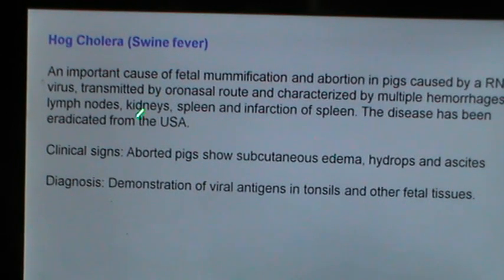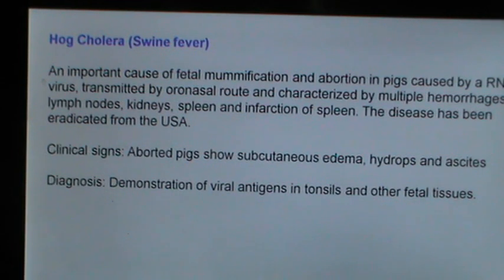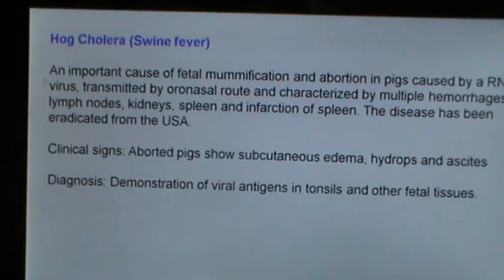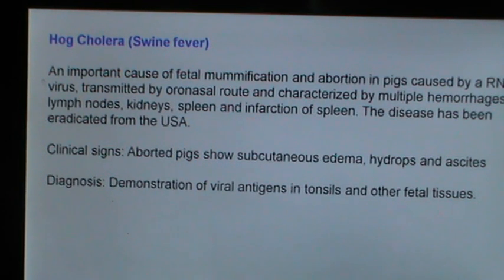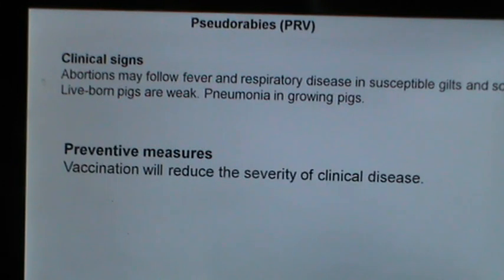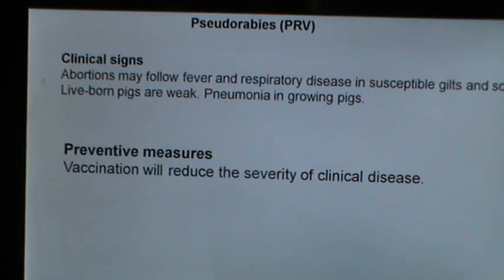Hog cholera or swine fever is an important cause of fetal mummification and abortion in pigs, caused by an RNA virus transmitted by the oronasal route and characterized by multiple hemorrhages in lymph nodes, kidneys, spleen, and infarction of the spleen. The disease has been eradicated from the USA. Clinical signs include aborted pigs showing subcutaneous edema, hydrops, and ascites. Diagnosis is through demonstration of viral antigens in tonsils and fetal tissues. For Pseudorabies (Aujeszky's disease), abortion may follow fever and respiratory disease in susceptible gilts and sows; live-born pigs are weak, and pneumonia can be seen in growing pigs. Vaccination reduces the severity of clinical disease.